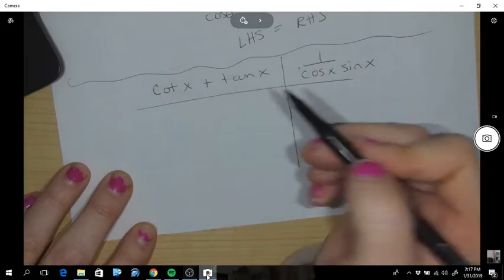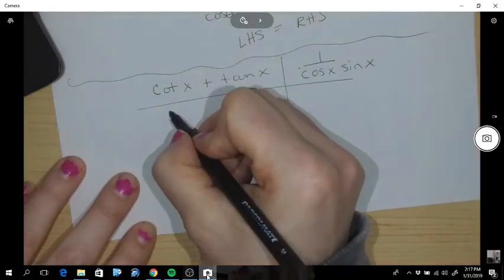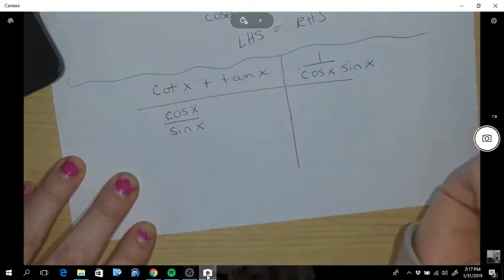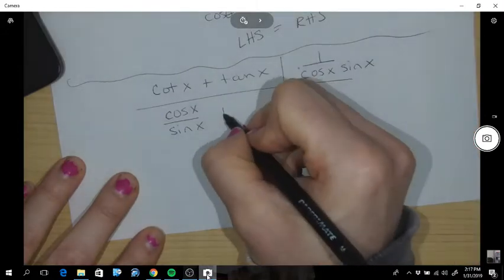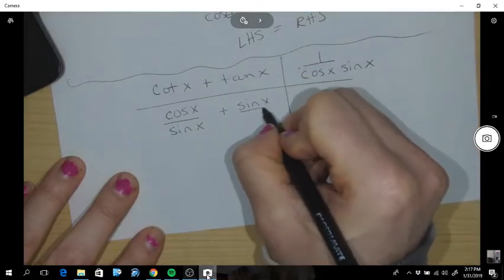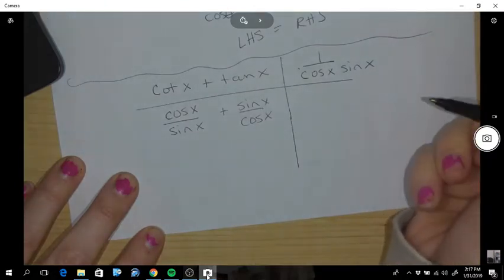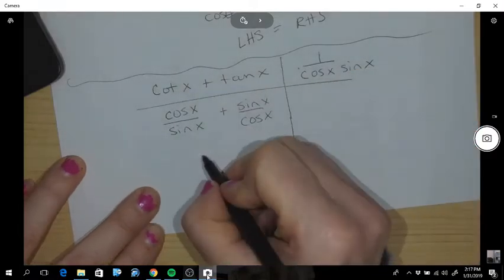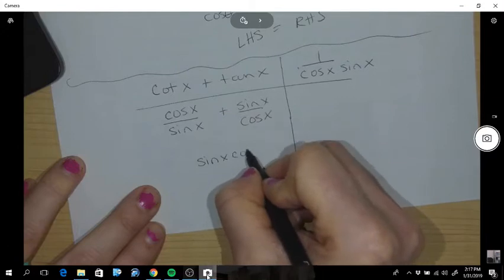Okay, so cotangent I'm going to write that as cos x over sin x. And tangent I'm going to write as sin x over cos x. Okay, so now I'm going to use a common denominator, sin x cos x.